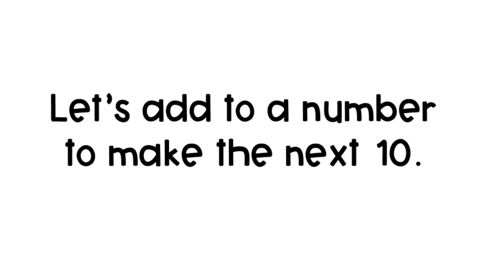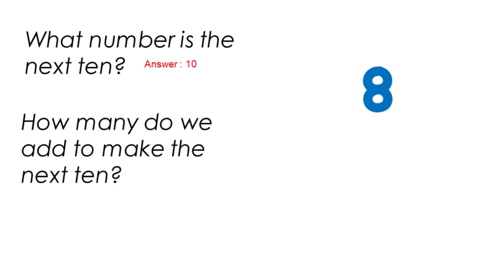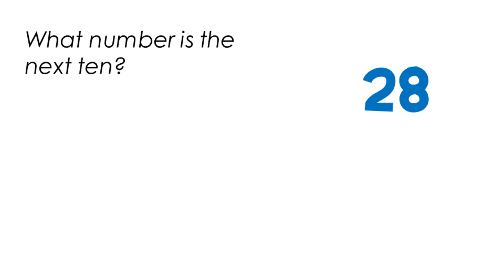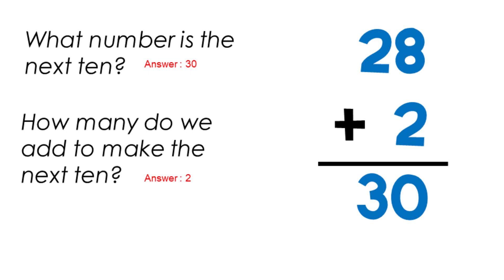Let's add to a number to make the next 10. What number is the next 10 up from 8? Answer: the next 10 is the number 10. How many do we add to make the next 10? We added two ones to 8 to make 10. Let's try a harder one. What number is the next 10 up from 28? The next 10 is the number 30. How many did we add to make the next 10? We added 2. 28 plus 2 is 30.